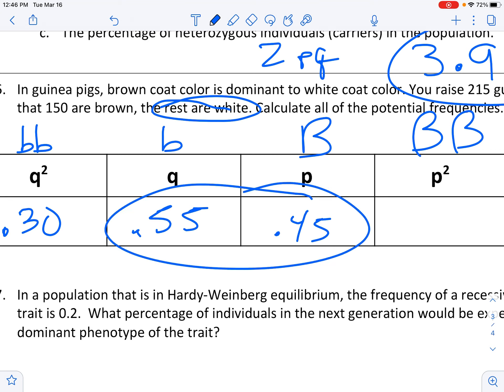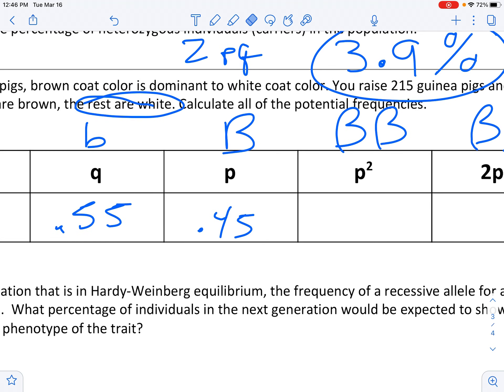Because remember that p plus q equals 1. 0.55 and 0.45, that must equal 1. p squared. So take 0.45 and square it. 0.45 times 0.45 equals 0.20.